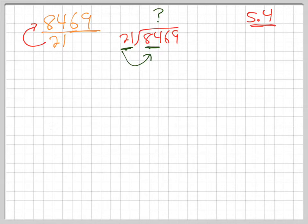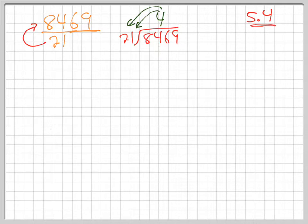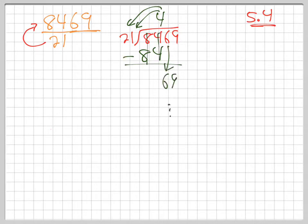What times 21 is 84? The answer is 4. So we go 4, and that 4 multiplies both digits — it doesn't just multiply the 2. That's important because it's the same thing when we get to the x's. I'm doing this so that the x's make more sense. Then you subtract, these are gone, bring down, and keep going.